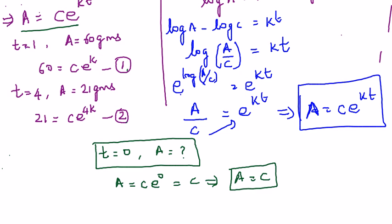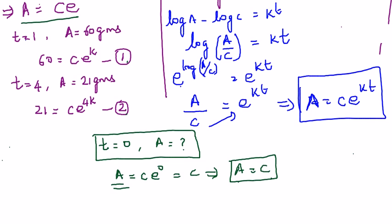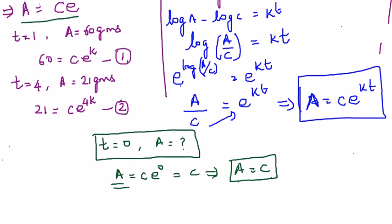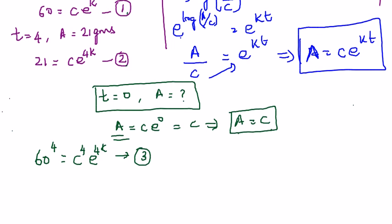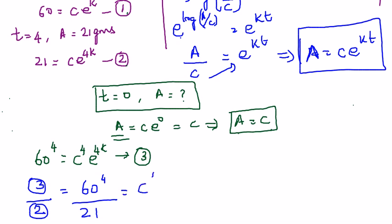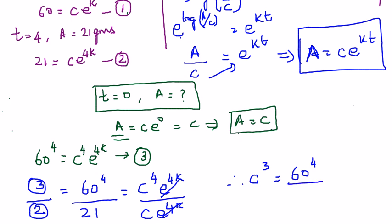From equations 1 and 2, if we find C, we know the initial amount since A = C at t = 0. To do this, take equation 1 to the power of 4: 60⁴ = C⁴ · e^(4k). Dividing this by equation 2 (21 = Ce^(4k)): 60⁴/21 = C³ · e^(4k) / e^(4k), so C³ = 60⁴/21.